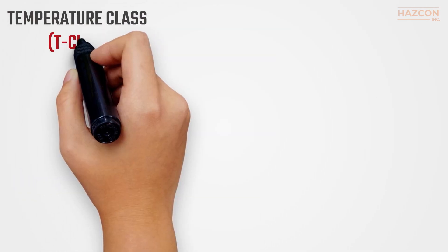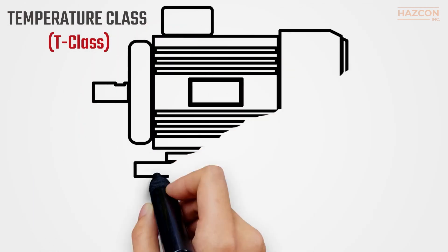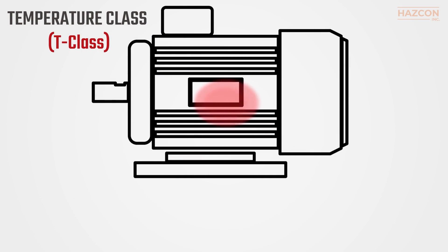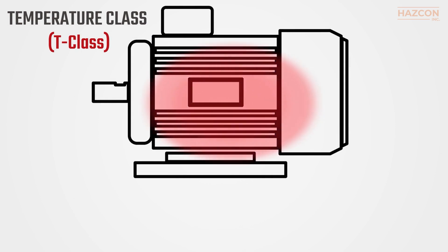Temperature class, known as T-class, is one of the characteristics used to classify an electrical device, so it may be safely installed in a hazardous location.